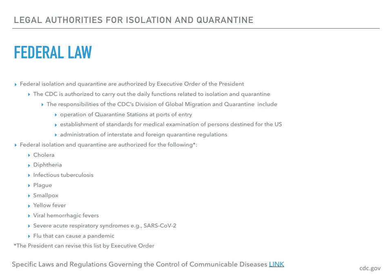While federal isolation and quarantine are authorized by Executive Order of the President, the authority for carrying out these functions on a daily basis has been delegated to the CDC. Under its delegated authority, the Division of Global Migration and Quarantine at the CDC fulfills this responsibility through activities including the operation of quarantine stations at points of entry, the establishment of standards for medical examination of individuals coming into the United States, and the administration of interstate and foreign quarantine regulations governing the international and interstate movement of persons, animals, and cargo. Federal isolation and quarantine are currently authorized for the communicable diseases listed, which you will recognize from our review of pandemics.